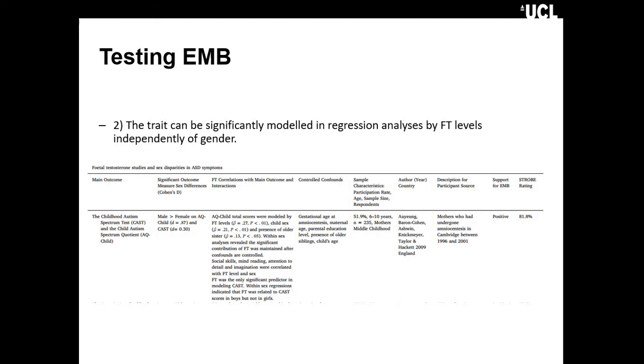The second criteria is whether fetal testosterone would survive a regression analysis with sex being part of it. Fetal testosterone would have to predict for this dimension above and beyond the gender of the child. In this particular study, there was support of that. The autism quotient was significantly different between males and females.